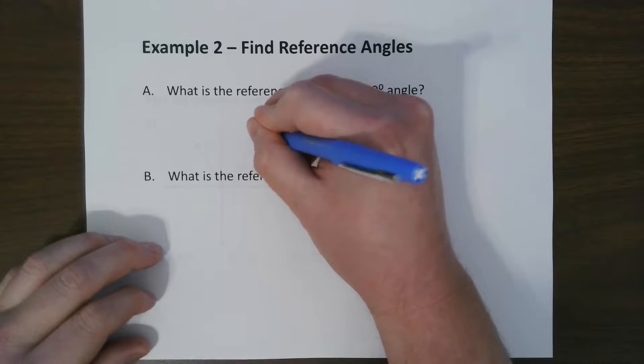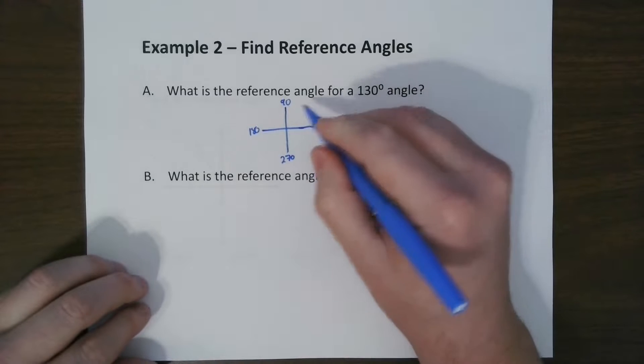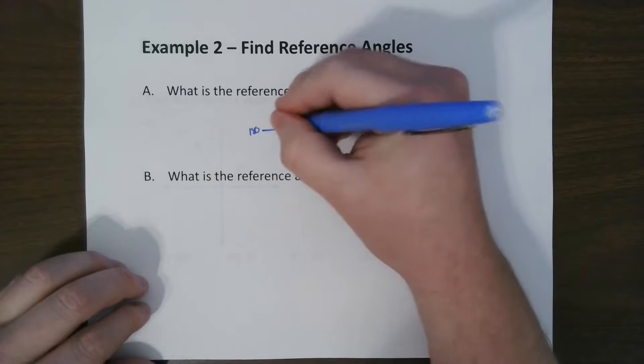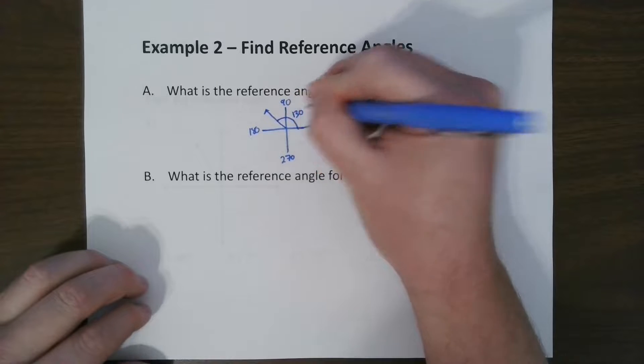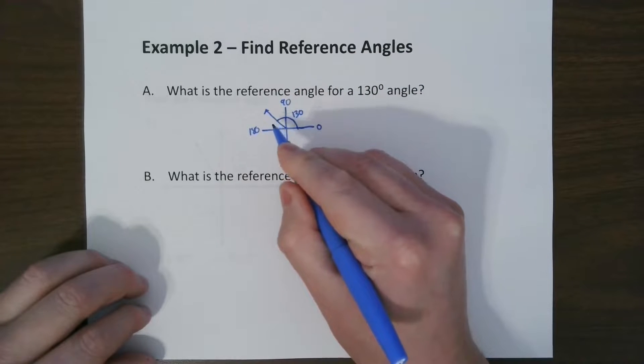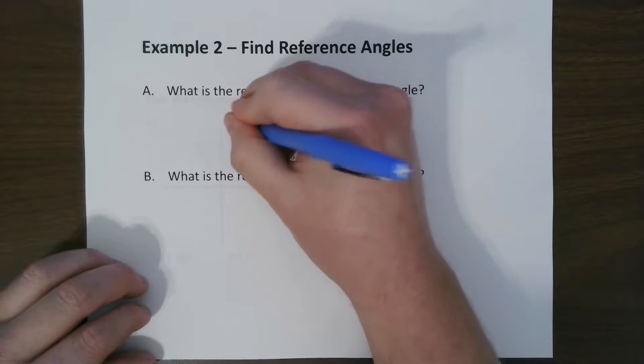this is 90, 180, and 270, and 360 all the way. 130 is somewhere between here and here. So we know 130 is right here. So how much more do we need in order to reach 180? The answer is 50.